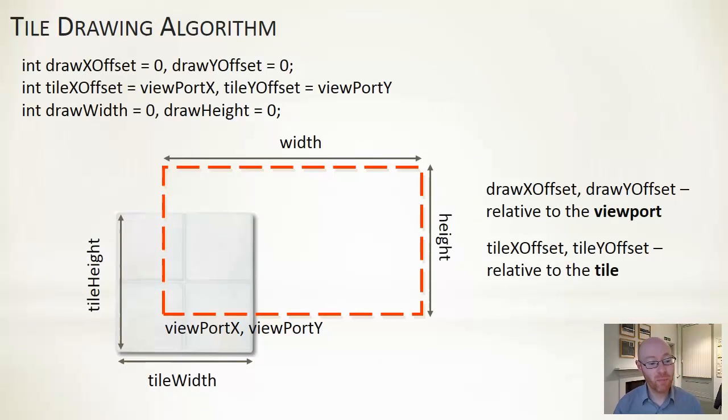So here's our setup. We have a number of variables. We're going to have a drawXOffset and drawYOffset, which are relative to the viewport. These are the location that we're drawing things in for the viewport. We'll have a tileXOffset and tileYOffset, which is the chunk of the viewport that we're drawing out. And initially we'll set it equal to a relative position to the start of the draw viewport. And we'll have a drawWidth and drawHeight, which is the portion of the image that we're drawing out to it.